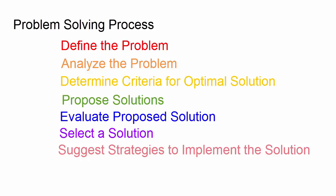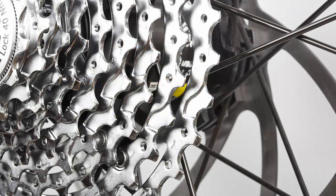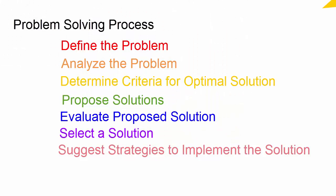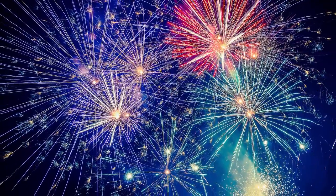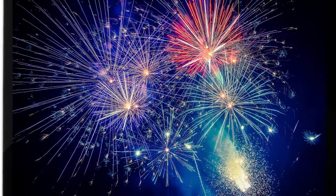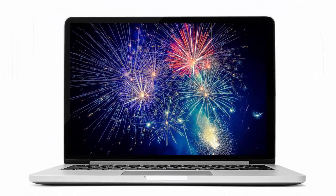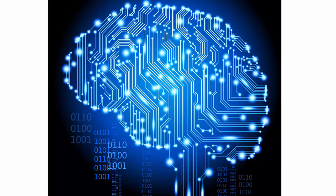Now that we have reviewed the process of problem-solving, let's switch gears and focus on what computational thinking is. In general, computational thinking is a set of skills that, when meshed with existing problem-solving methods, provide new avenues for solutions and the opportunity to take advantage of computers to automate repetitive tasks and make problem-solving more efficient. Computational thinking takes advantage of both the power of the human brain and the power and efficiency of ever-advancing technologies.